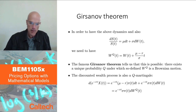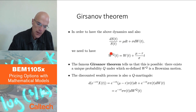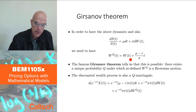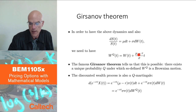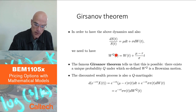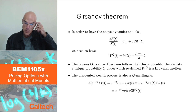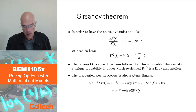Girsanov's theorem says: if I define W^Q(t) as W(t) plus (mu minus r)/sigma times t — choosing the constant to be (mu - r)/sigma — then there exists a probability Q under which this process W^Q is a Brownian motion. For any constant times t added to Brownian motion, there exists a probability such that the resulting process is a Brownian motion. And this is the only probability that does the job.